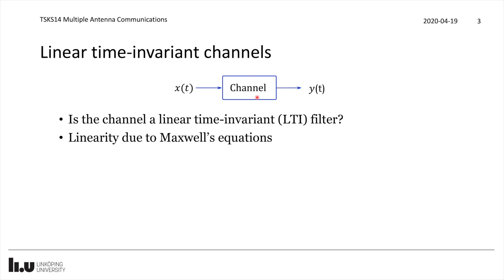The question is: is a wireless communication channel an LTI system? If X is the transmitted signal and Y is the received signal, is this relation described by a linear and time invariant system? Linearity is guaranteed by Maxwell's equations, however time invariance is much more complicated. As soon as either the transmitter, receiver, or something in the propagation environment is changing, we lose time invariance. So a wireless communication system is generally not time invariant.